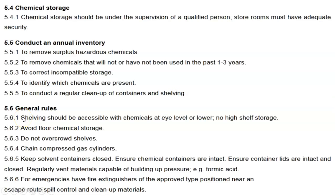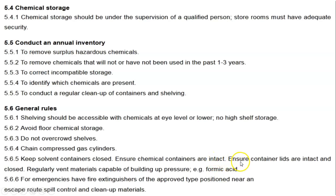General storage rules: shelving should be accessible with chemicals at high or lower levels — no high shelf storage. Avoid floor chemical storage. Do not overcrowd shelves. Chain compressed gas cylinders. Keep solvent containers closed. Ensure that chemical containers and their lids are intact and closed. Regularly vent materials capable of building up pressure, for example formic acid.